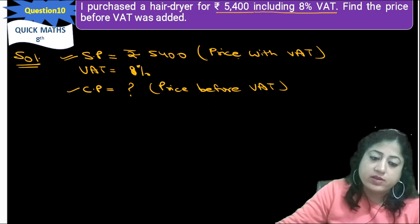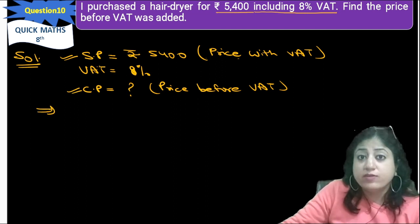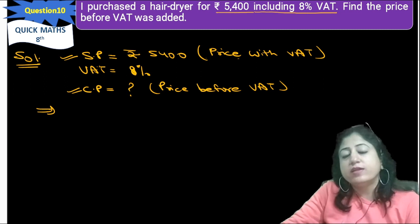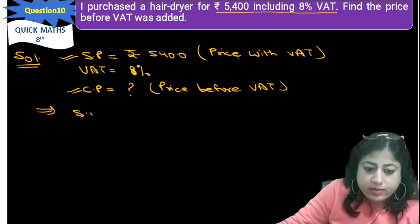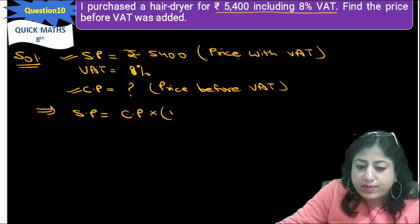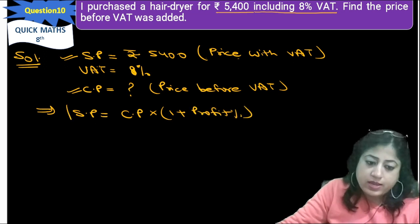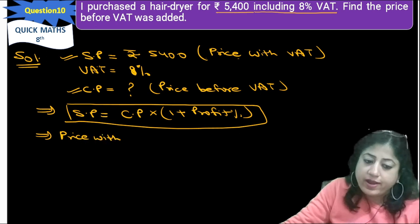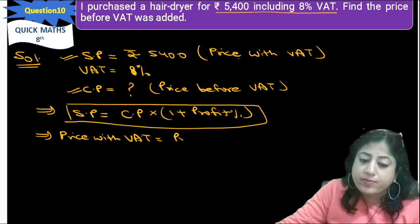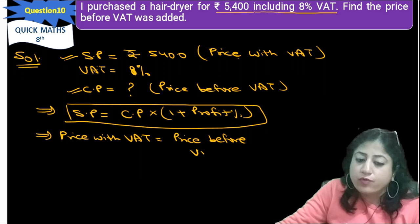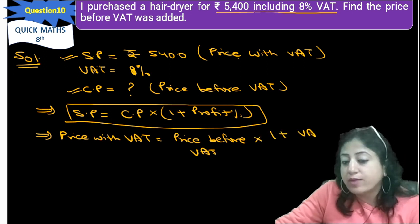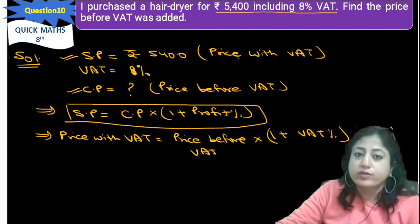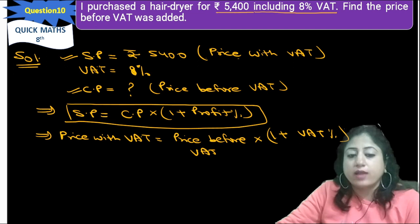We will treat price with VAT as SP and price before VAT as CP. There is a formula — VAT will be added to the price, so we will take it as profit percent. The formula will be: SP equals CP multiplied by (1 plus profit percent). In the same manner, price with VAT equals price before VAT multiplied by (1 plus VAT percent).